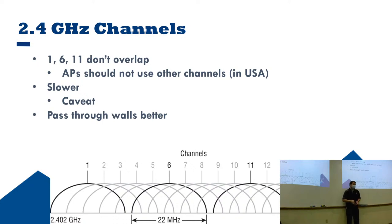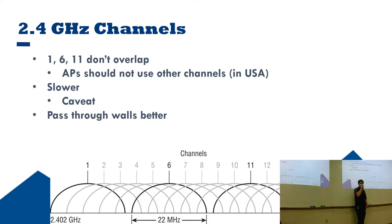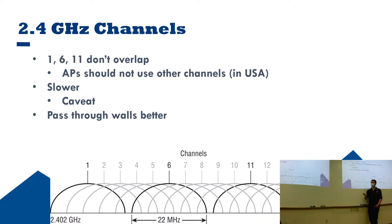2.4 gigahertz is a very crowded frequency in the United States. Many different things use it — DECT wireless phones, Bluetooth, and more. The FCC set aside a total of 14 channels for Wi-Fi on the 2.4 gigahertz spectrum, but only three of those do not have any overlap. You want to make sure you're using channels 1, 6, or 11. Pretty much every commercially available product in the US will only go to one of those three frequencies.